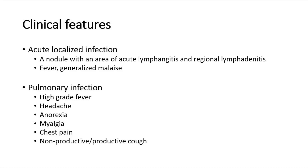Another range of presentation is pulmonary infection, which may range from mild bronchitis to severe fulminating pneumonia. Symptoms include high-grade fever, headache, anorexia, myalgia, chest pain, and coughing — either non-productive or productive. Radiological findings on chest X-ray can show bilateral disseminated nodules or diffuse fluffy alveolar infiltrates.